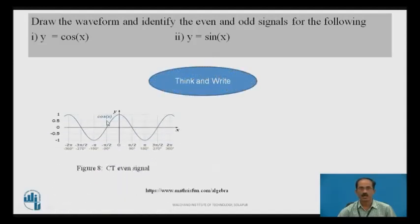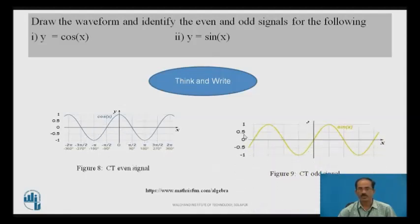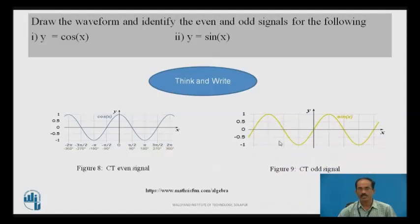This is a cosine wave, cos(x); it is an even signal. Similarly, this is a sine wave; we can see here it is an odd signal.